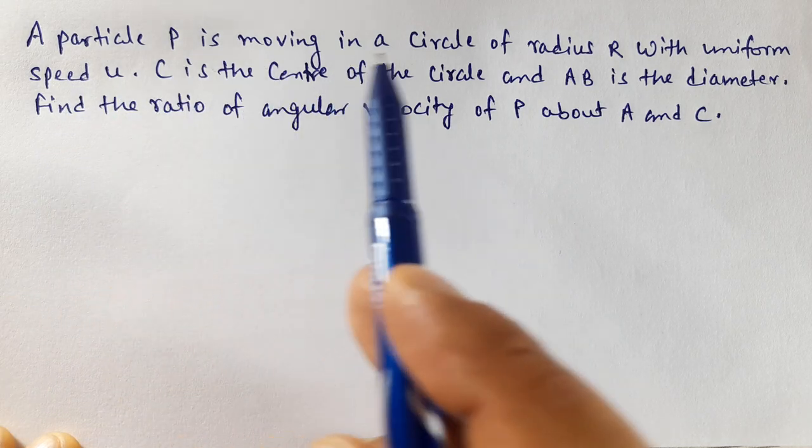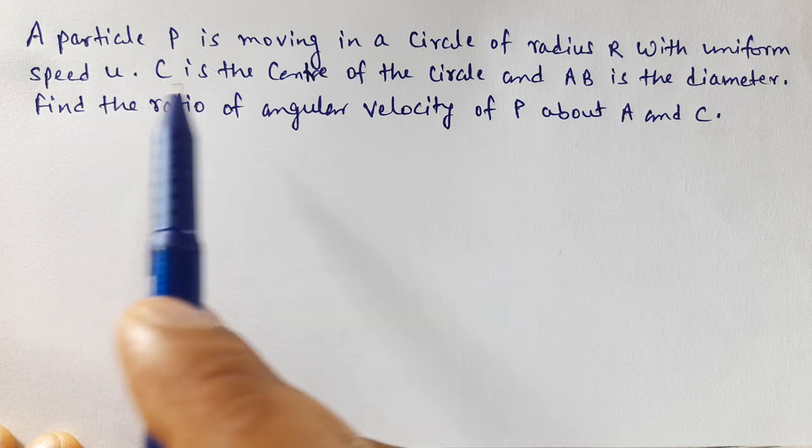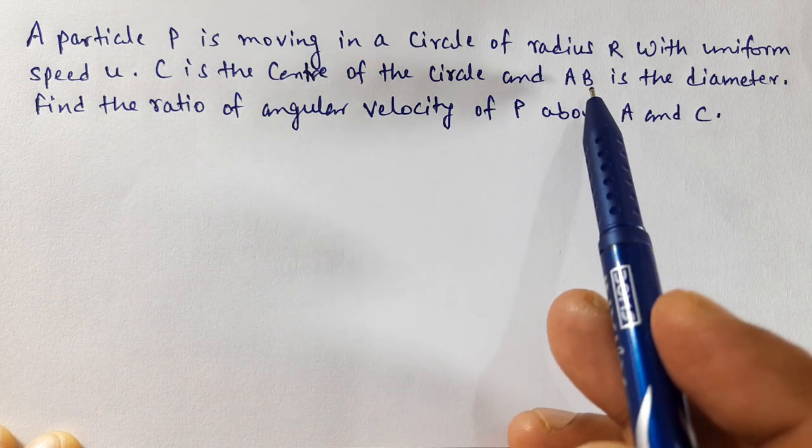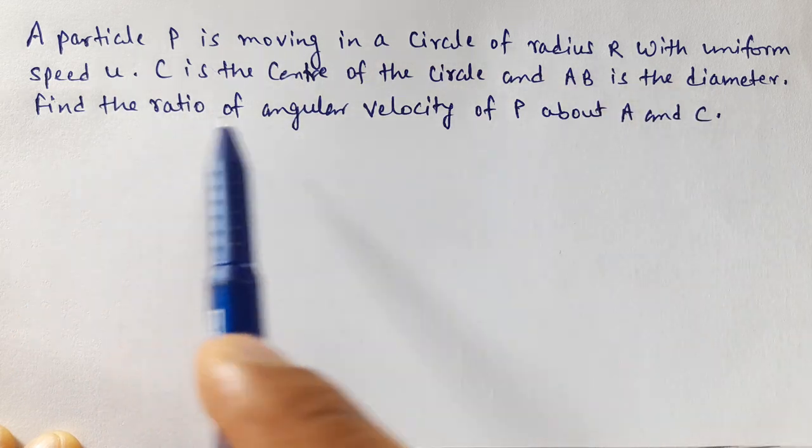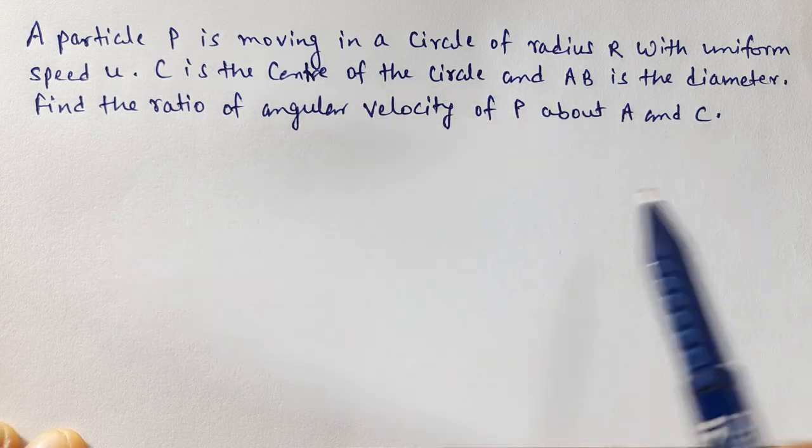A particle P is moving in a circle of radius R with uniform speed U. C is the center of the circle and AB is the diameter. Find the ratio of angular velocity of P about A and C.